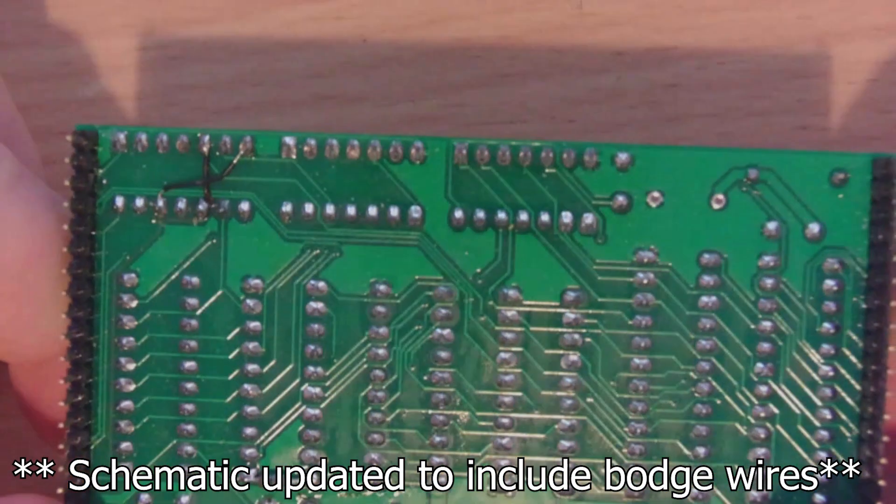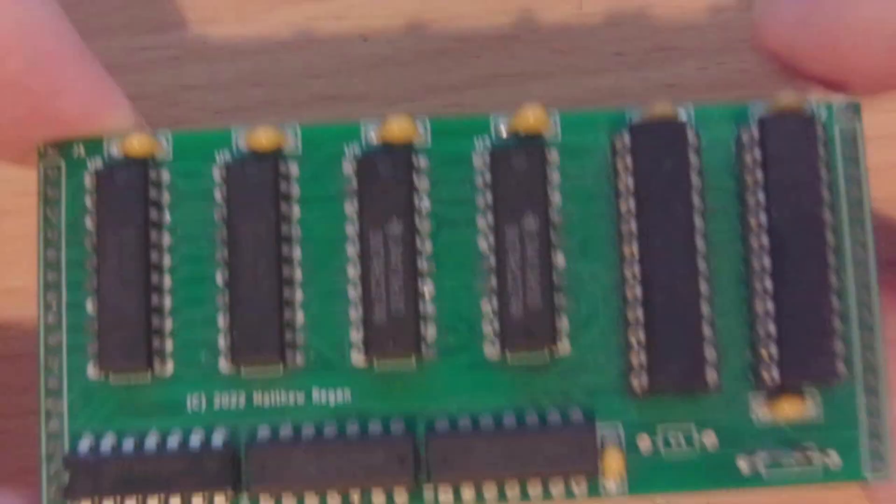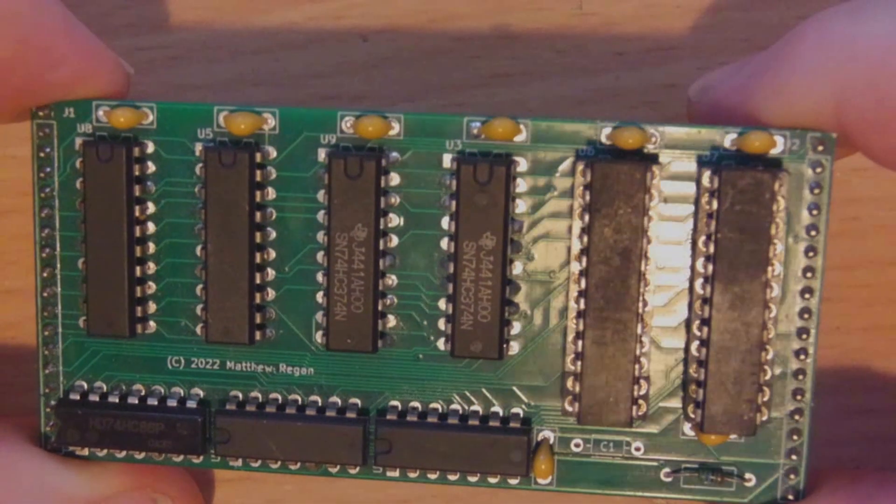Now, I did actually make a mistake in the first version of this board. I had the zero detection logic coming off S0 through S7. This misses an output bit in the shift write operation, and this actually caused a problem in Pac-Man.